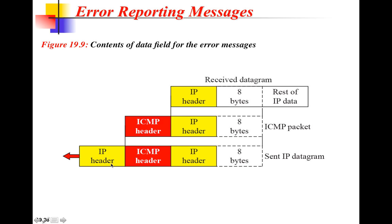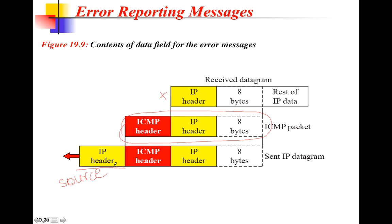Here is how we make an ICMP datagram. We have a problem packet that is going to be discarded. Before discarding it, we take the IP header and the first eight bytes and attach the ICMP header to it. Then, to send this packet we still need source and destination addresses, so we take the whole ICMP packet, attach an IP header to it, and it is sent to the original source.